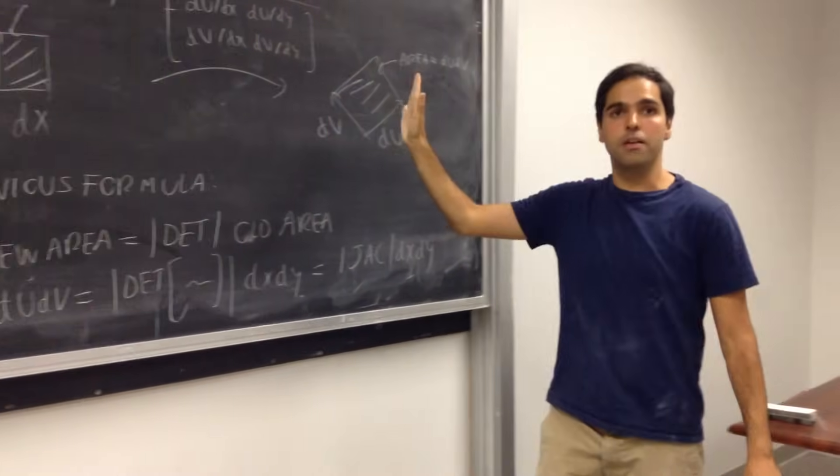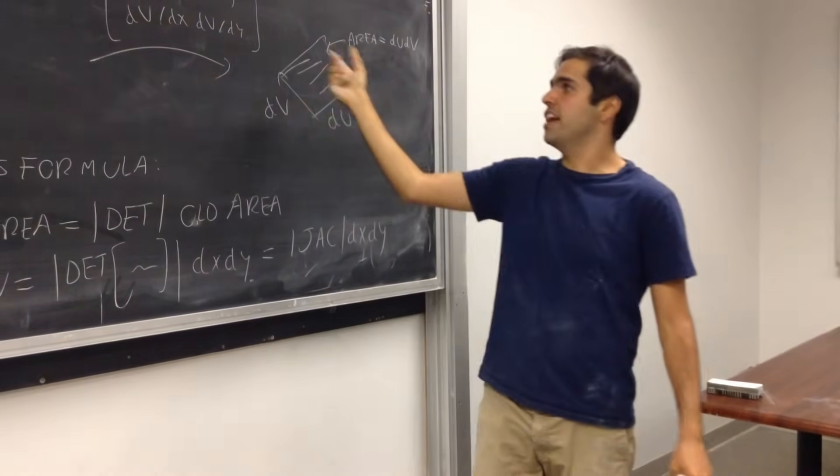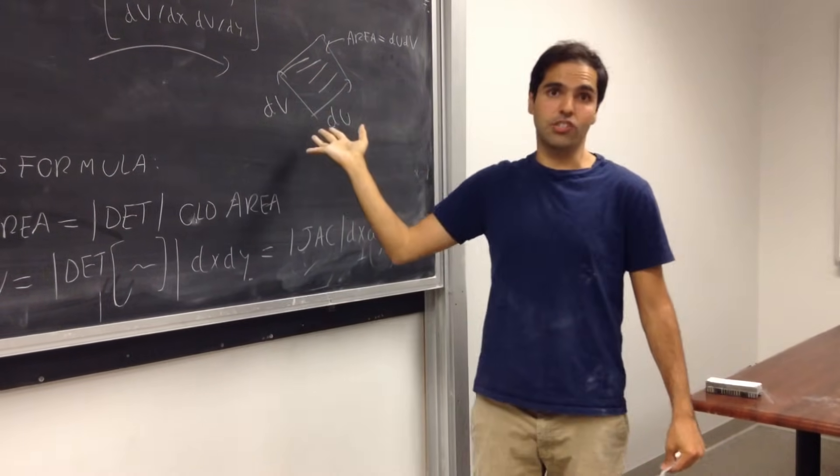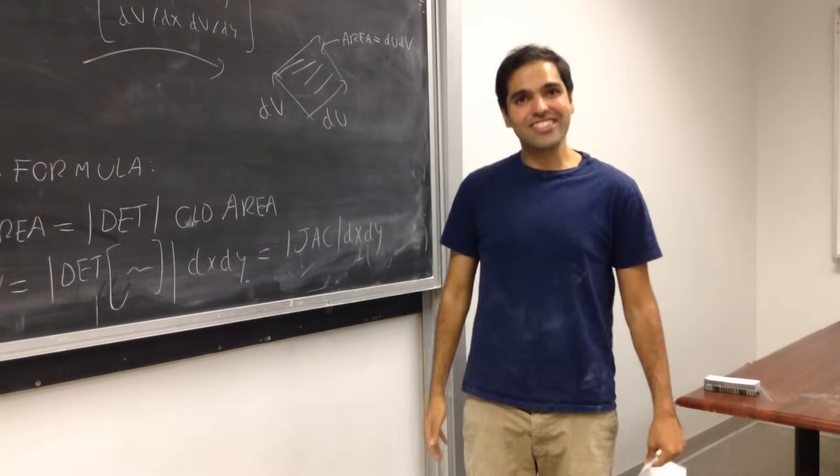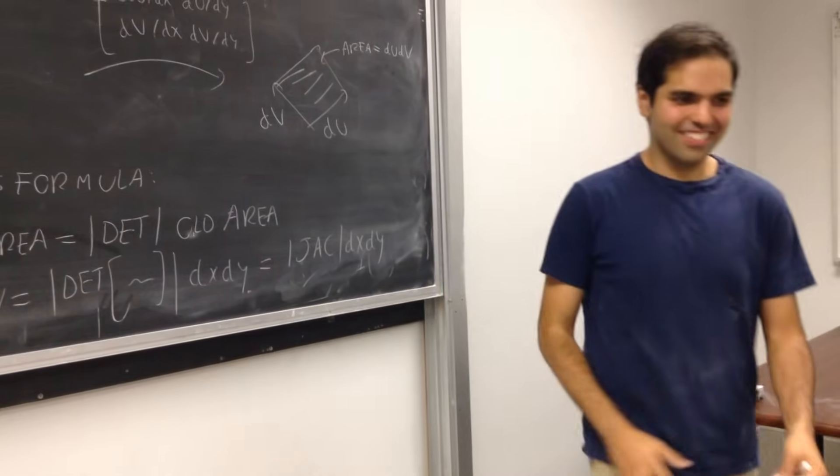when you use a change of variables, that the Jacobian appears, because the Jacobian is just a measure of the change of area when you apply a change of variables. All right, thank you so much for watching, and hope you had fun.